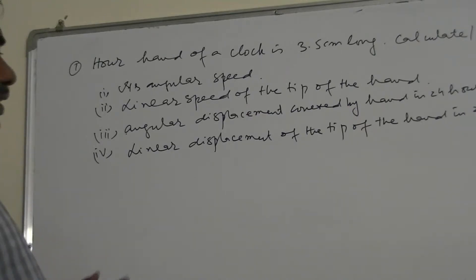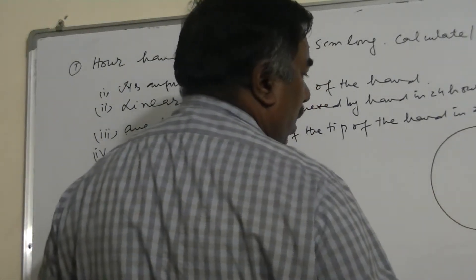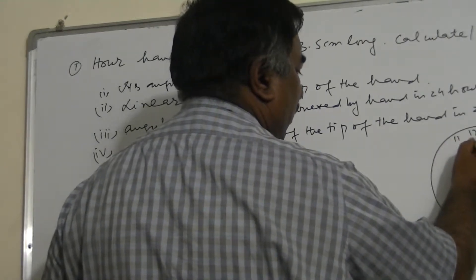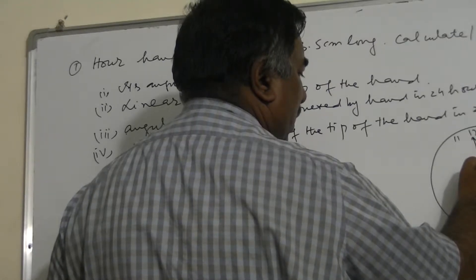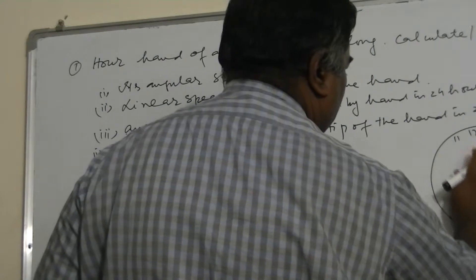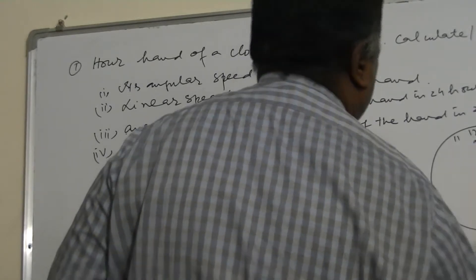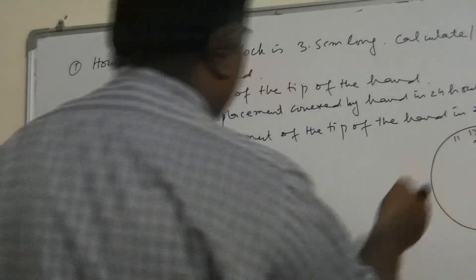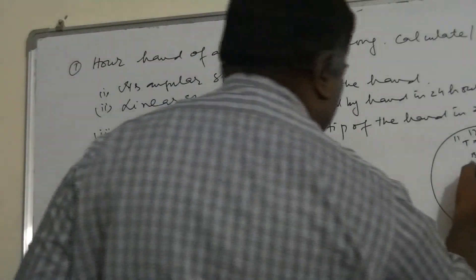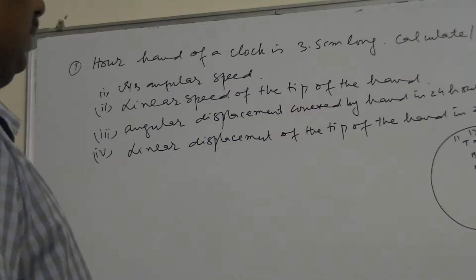Now, this question specifies 'tip' — that is necessary for linear speed or linear displacement. Suppose this is a wall clock: this is 12, this is 1, this is 2, this is 3, and so on. This is the hours hand, the smaller one. Suppose it starts its journey. Points A, B, and T (the tip) on the hand all have the same angular speed, and hence they will cover the same angular displacement. So the word 'tip' is not necessary for angular quantities.